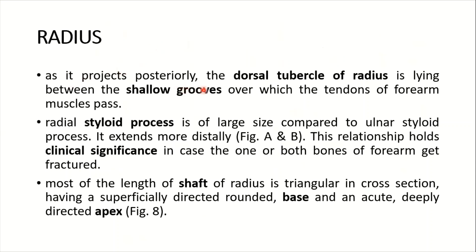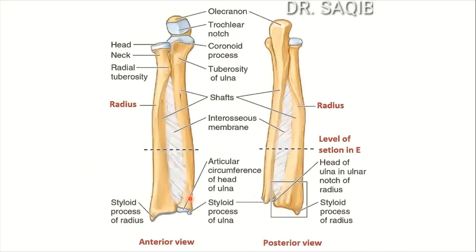As the radius projects posteriorly, the dorsal tubercle of the radius lies between shallow grooves over which the tendons of the forearm muscles pass. The radial styloid process is of large size compared to the ulnar styloid process and extends more distally — this relationship holds clinical significance in case of fracture. Most of the length of the shaft is triangular in cross section, having a superficially directed rounded base and an acute deeply directed apex.